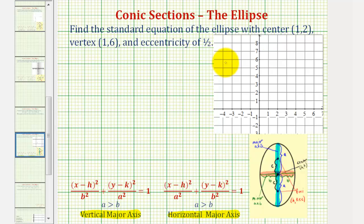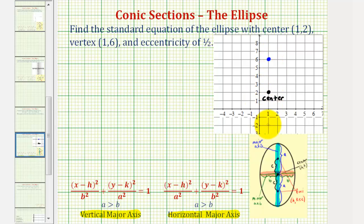Let's start by sketching the given information on the coordinate plane. The center has coordinates (1,2), and one vertex has coordinates (1,6). Since this is one endpoint of the major axis and is four units above the center, the other vertex must be four units below the center.